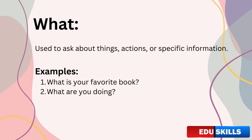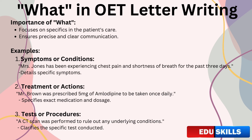What is next. What helps us ask about things, actions, or specific information — for example, 'What is your favorite book?' or 'What are you doing?' Now let's move on to another crucial question word in OET letter writing: what. This word is particularly useful when you need to ask or provide specific details about a patient's condition, treatment, or any relevant actions. Using what correctly ensures that you convey clear and precise information, which is essential for effective communication in healthcare.